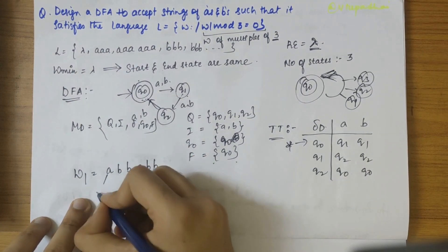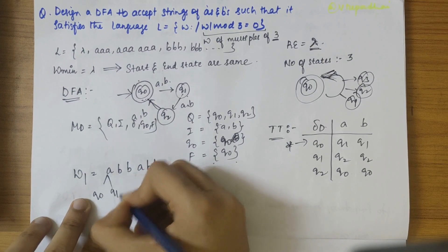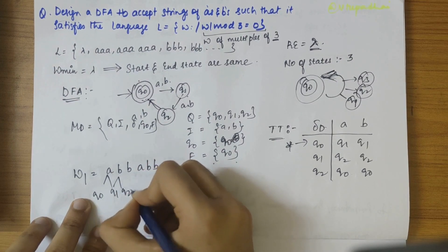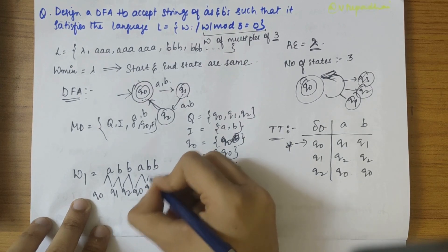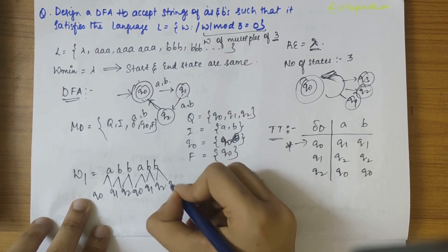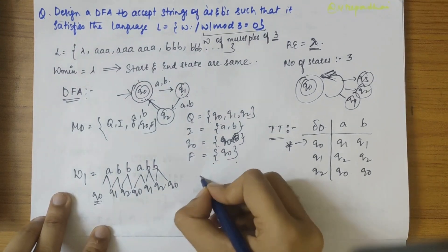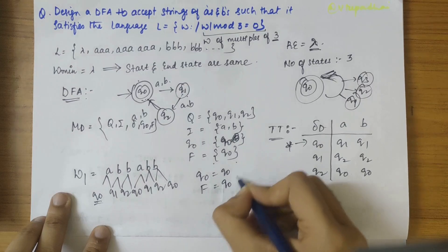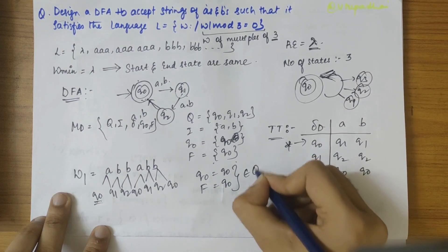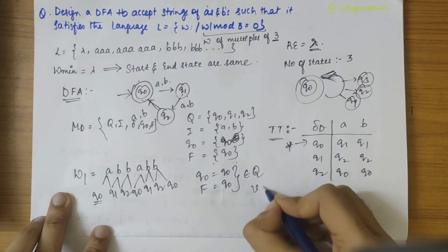So here Q0 on A is Q1, Q1 on B is Q2, Q2 on B is Q0, Q0 on A is Q1, Q2, and Q0 itself. So it is starting from Q0, it is ending at Q0, these belong to Q, thus it is valid.